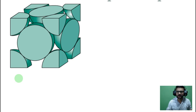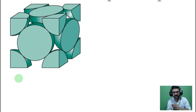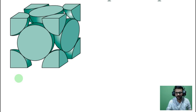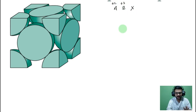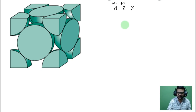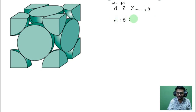Today we will talk about spinel structures, a topic studied in both coordination chemistry and solid state chemistry. Spinel structures involve two metals: A in a +2 oxidation state and B in a +3 oxidation state, along with a non-metal X, which can be sulfur, fluorine, or oxygen. We are focusing on spinel compounds where X is oxygen.